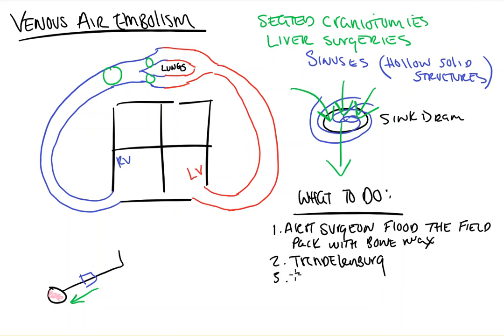Step three is supportive care of their pressure. A lot of small air embolisms may cause hemodynamic instability briefly, but are short-lived as they will get broken up, dissolved, and pass through the lungs normally. Other larger ones might not be able to. So you support the patient, ask the surgeon to stop, put them in Trendelenburg, and do your best to keep their pressures elevated and keep them hemodynamically stable.